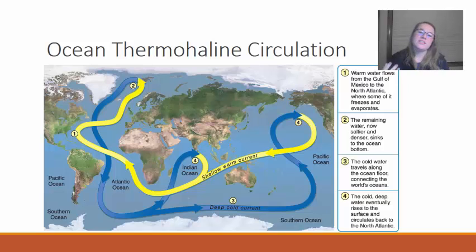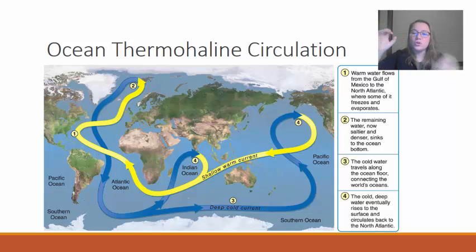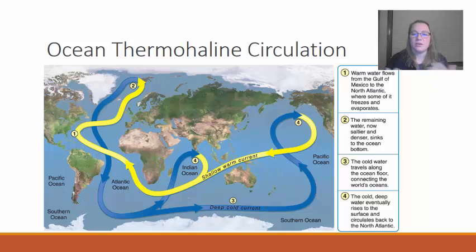In thermohaline circulation, this warm water flows up towards Iceland and Greenland, where it starts to cool, becomes more dense, and sinks down to the bottom of the ocean. This thermohaline pump is really what drives this entire current.